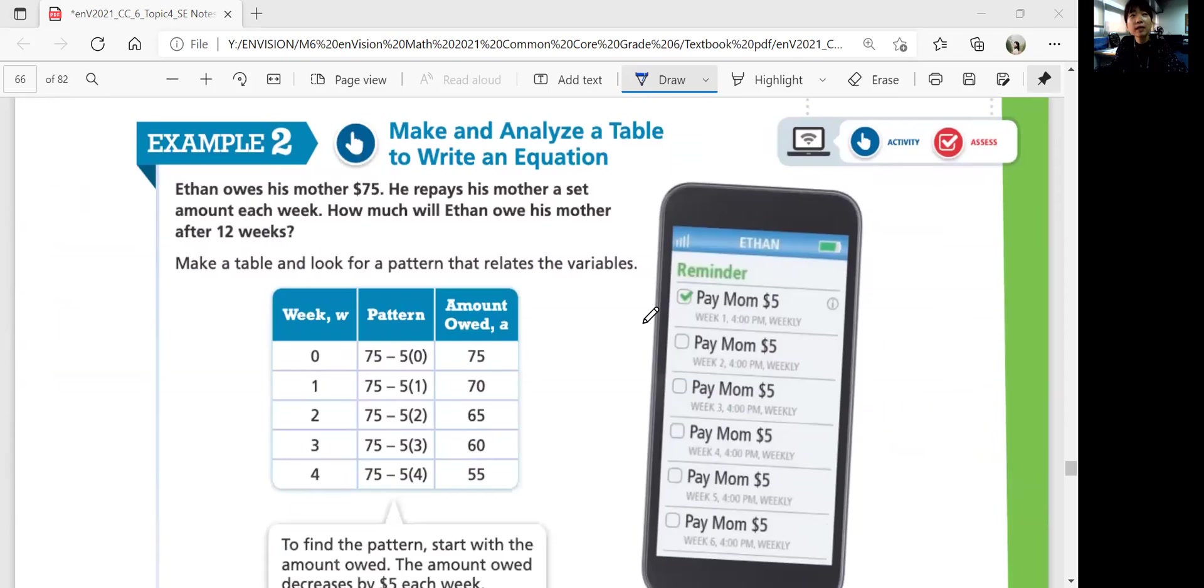Example 2. Make and analyze a table to write an equation. Ethan owes his mother $75. He repays his mother a set amount each week. How much will Ethan owe his mother after 12 weeks? So right now, he owes $75. And then he's going to pay the same amount every week. Pay mom $5. So he's going to pay mom $5 every week.